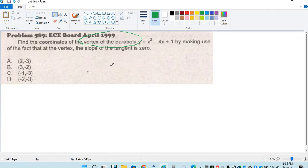Ang general form ng conic is ax squared plus bxy plus cy squared plus dx plus ey plus f is equal to 0. Therefore, magiging siyang x squared minus 4x minus y plus 1 is equal to 0.